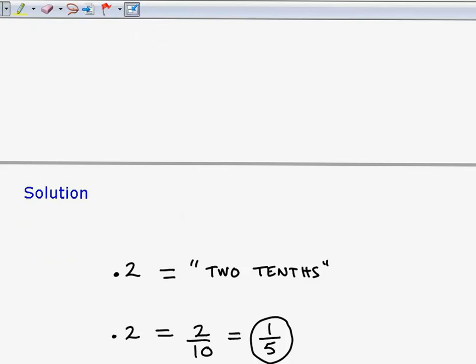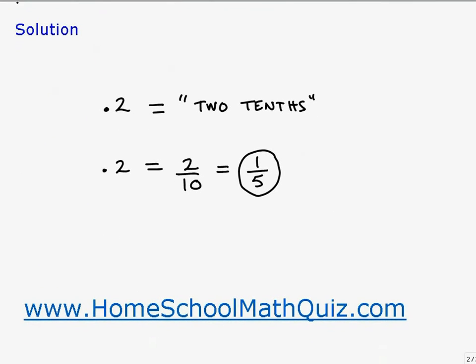Alright, let's take a look at our solution. So how would you say this decimal? Some of you might say 0.2 and that would be correct, and others of you might say two tenths and that's even better with respect to this problem because two tenths is the answer.